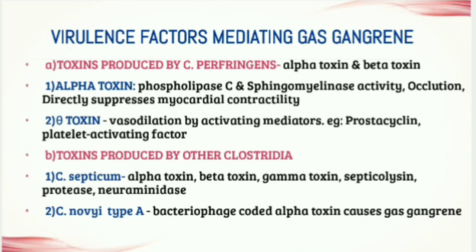Clostridium septicum produces alpha toxin, beta toxin, gamma toxin, septicolysin, protease, and neuraminidase. Clostridium novyi has four subtypes — type A through D. Among these, Clostridium novyi type A produces alpha toxin, which is a common cause of gas gangrene.